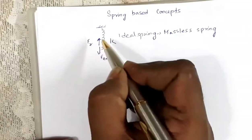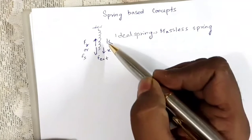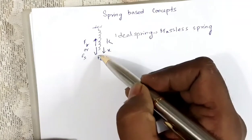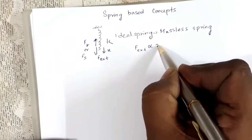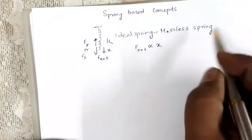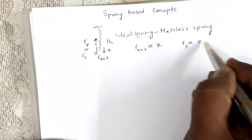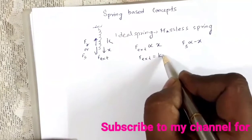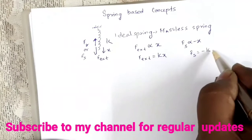The spring force or restoring force acts opposite to the external force. The greater the external force, the greater the extension, so F_external is proportional to extension x, and both are in the same direction. The spring force acts opposite to the direction of extension, so F_spring is proportional to x but with a negative sign. Therefore, F_external = kx and F_spring = -kx, where k is the spring constant.